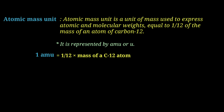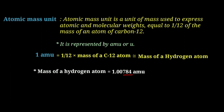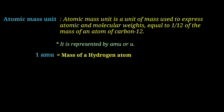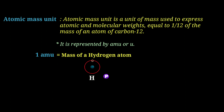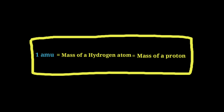One AMU is also known as the mass of the hydrogen atom, which contains a proton and a neutron. The electron mass is negligible. So 1 AMU is equal to the mass of a hydrogen atom, which is equal to the mass of a proton.